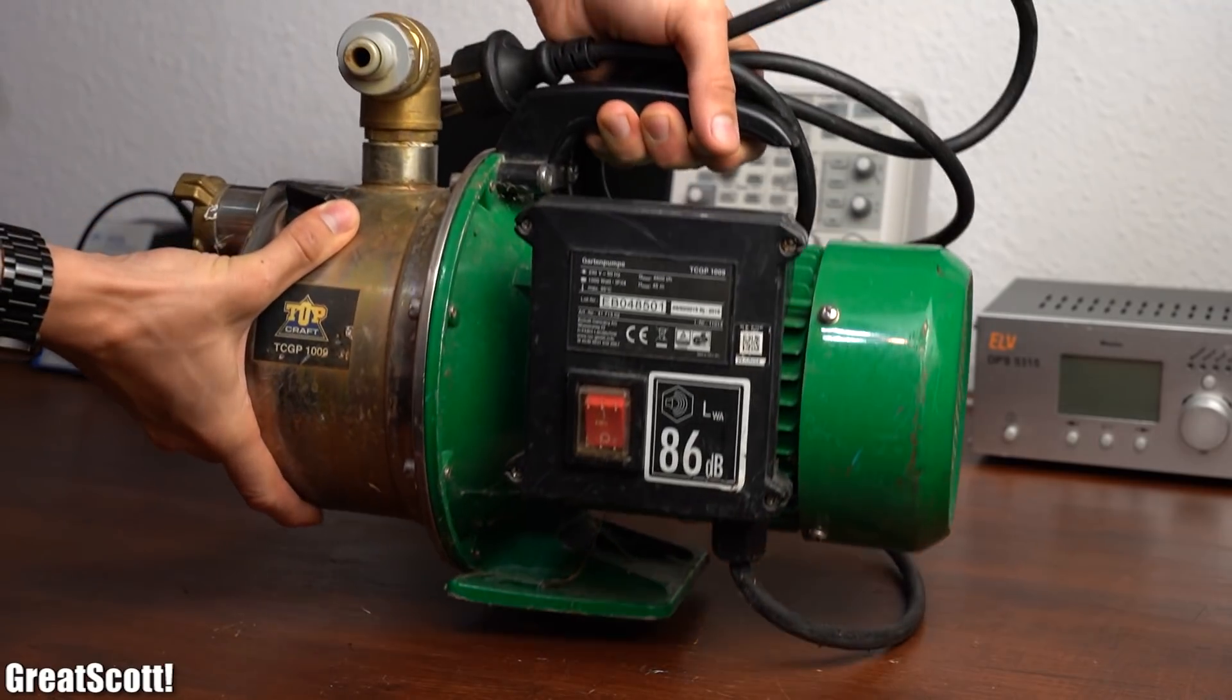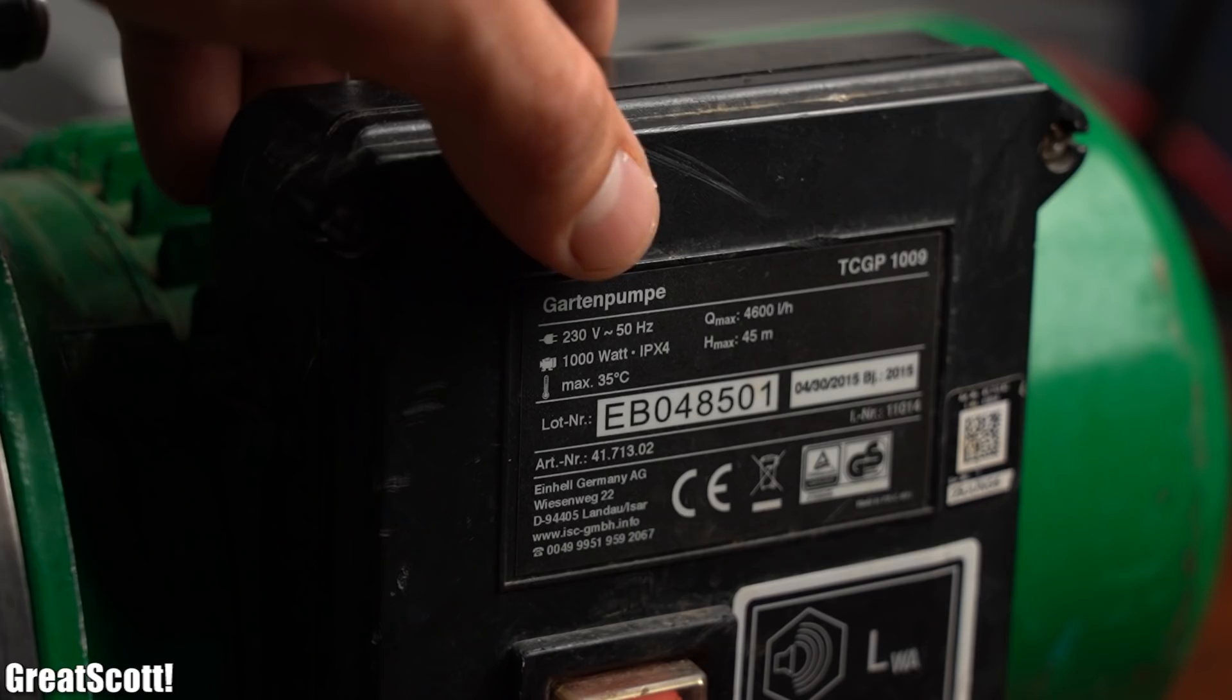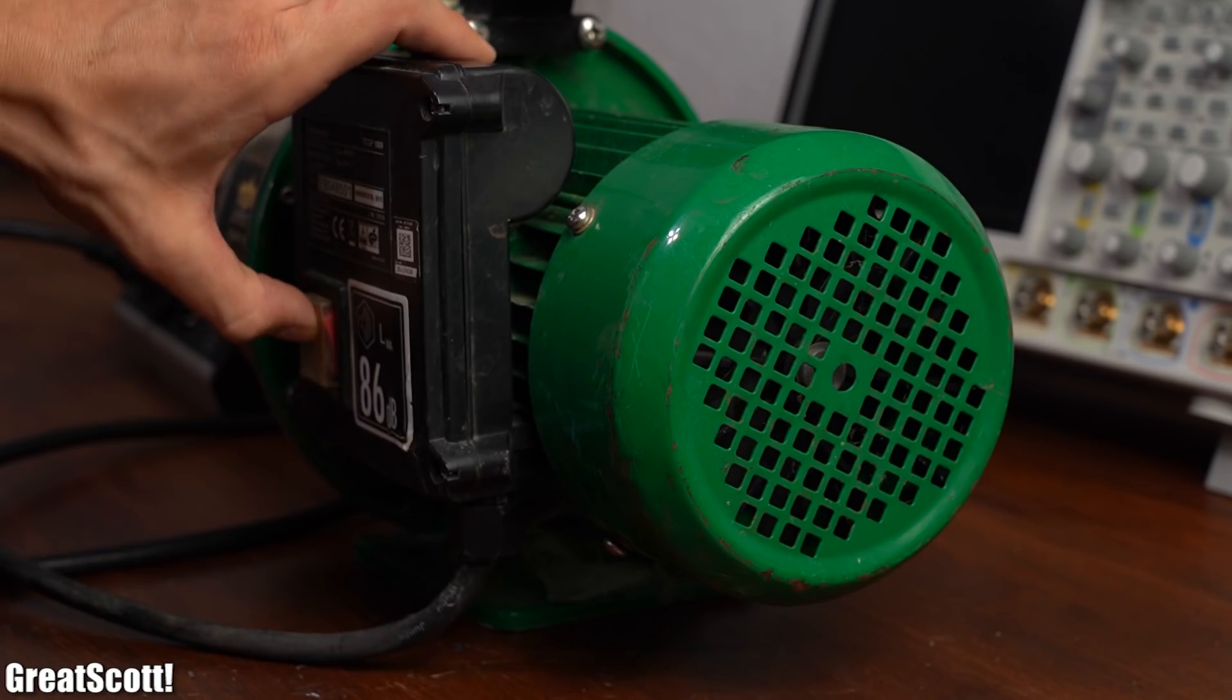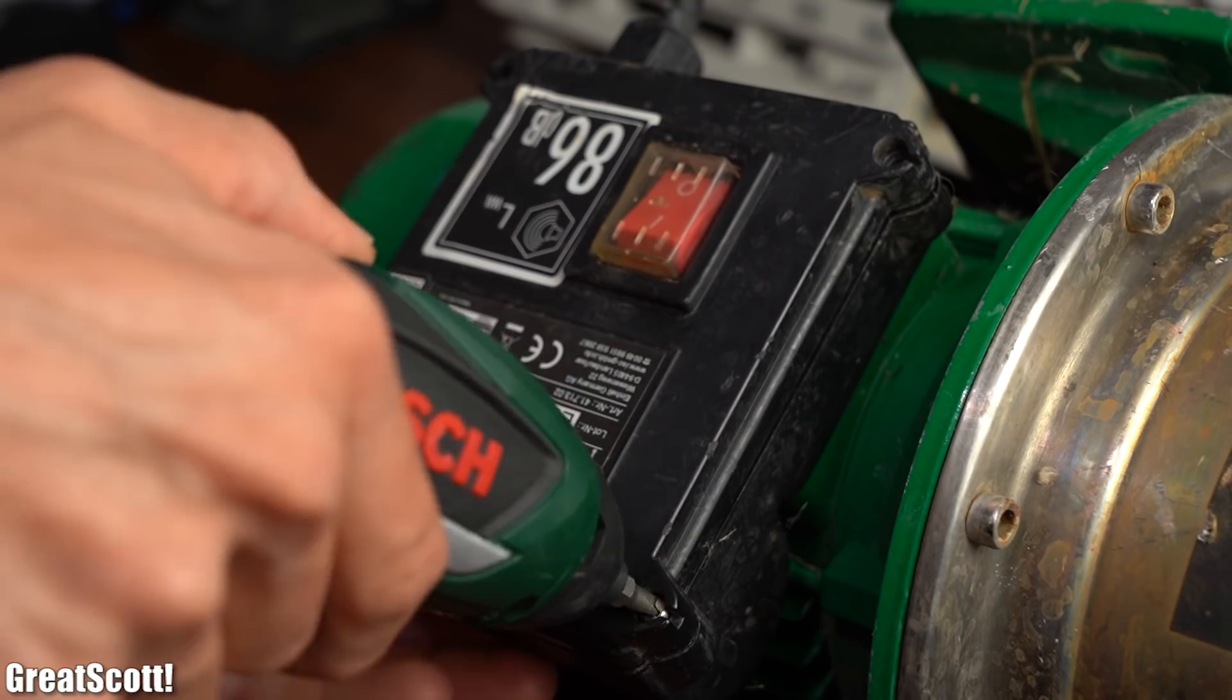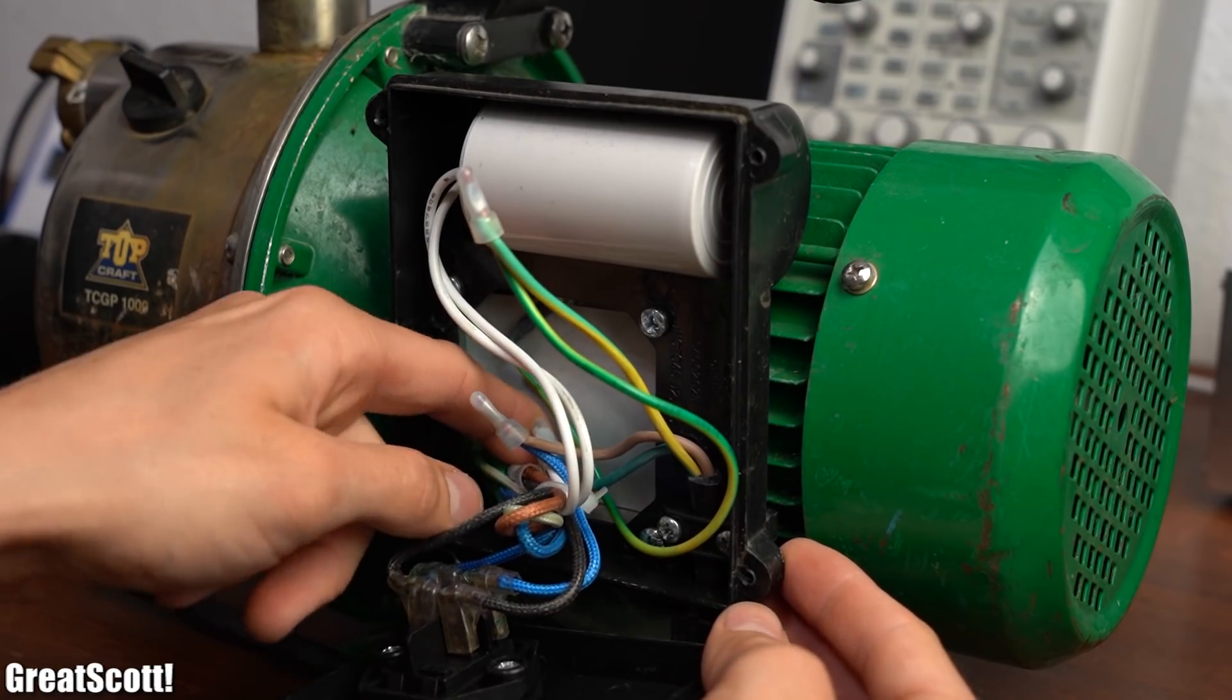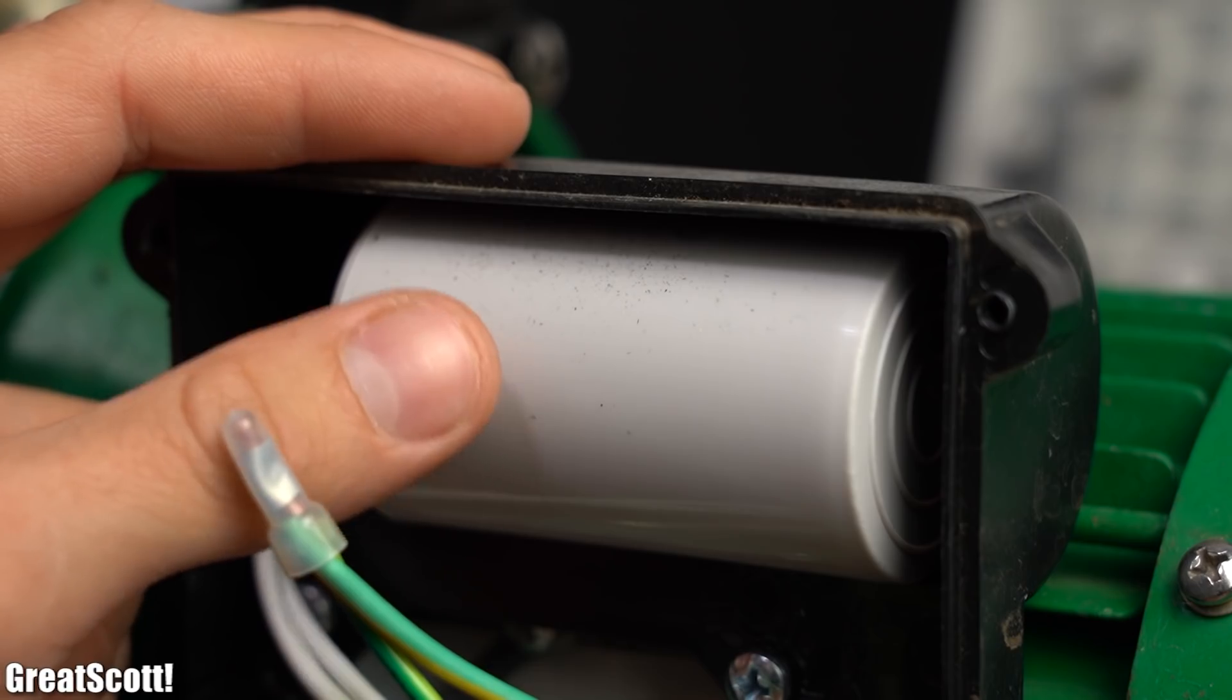Now at this point you might wonder why asynchronous motor appliances like this water pump only uses one phase and the neutral wire instead of 3 phase AC voltage. The solution can be found when we open up its terminal box which looks a bit confusing at first but the main difference of this box is the utilized capacitor.